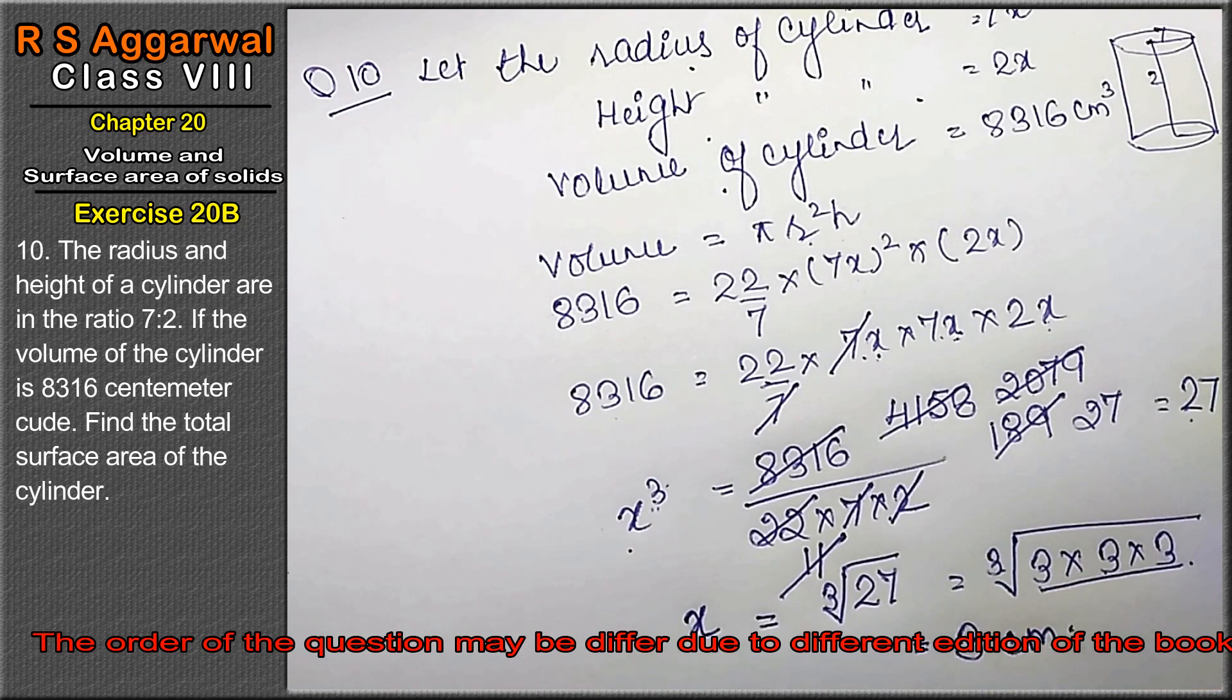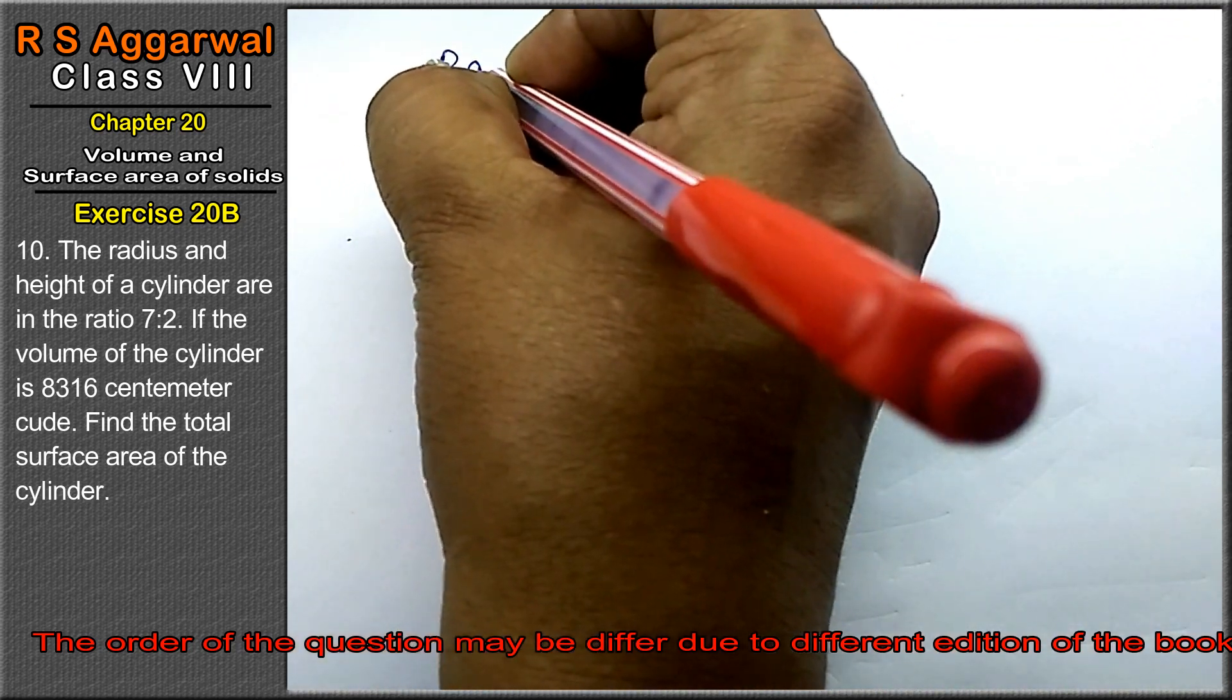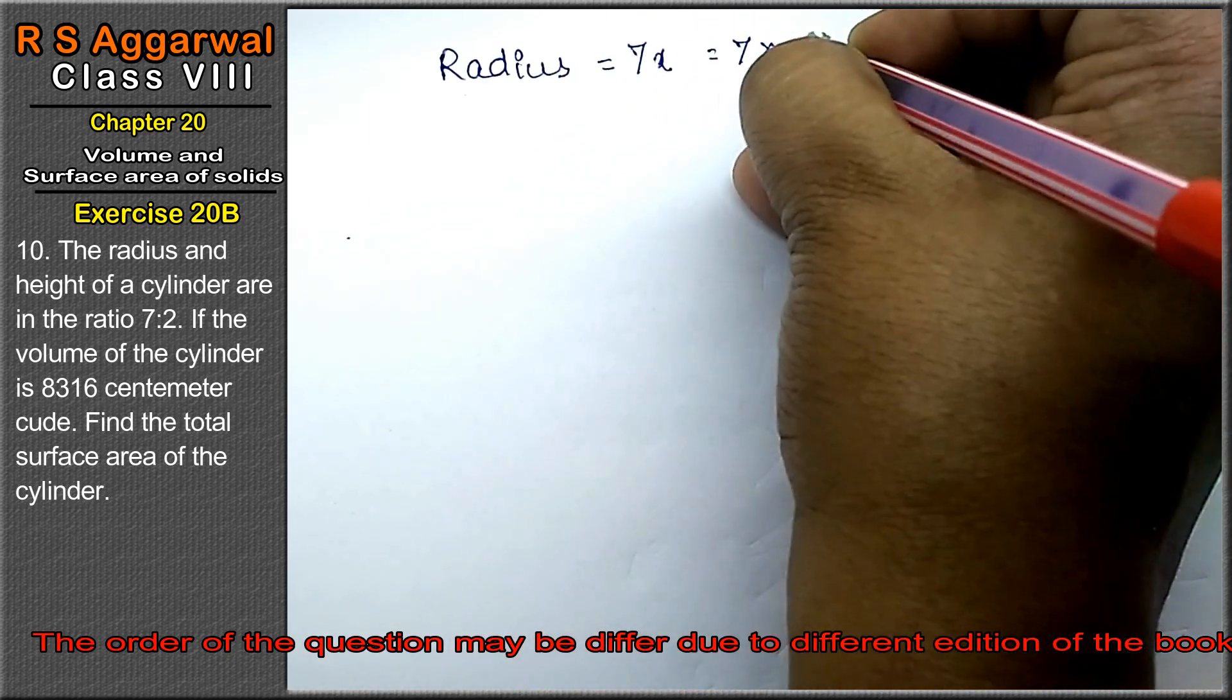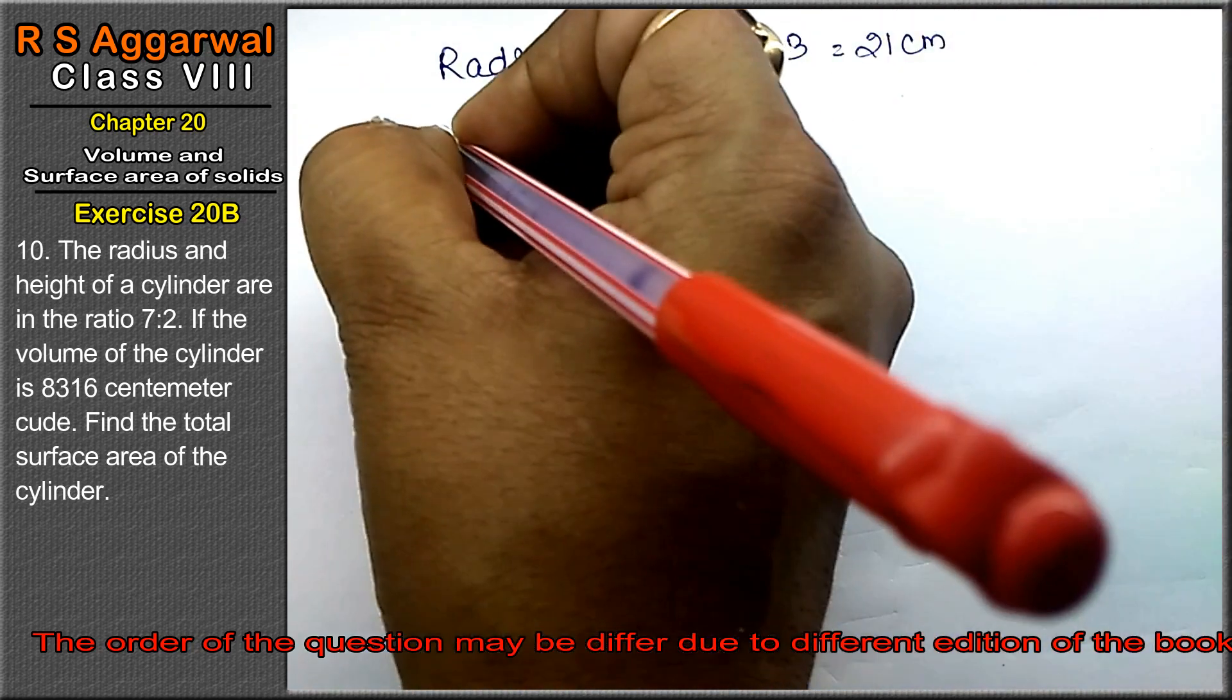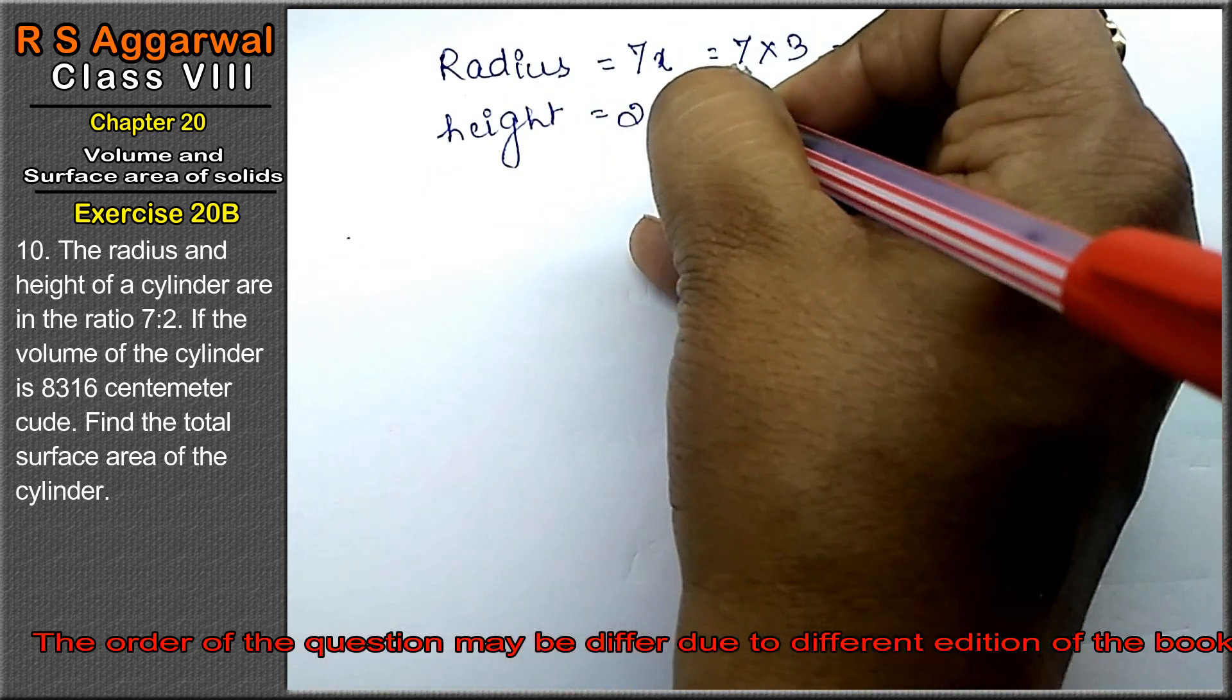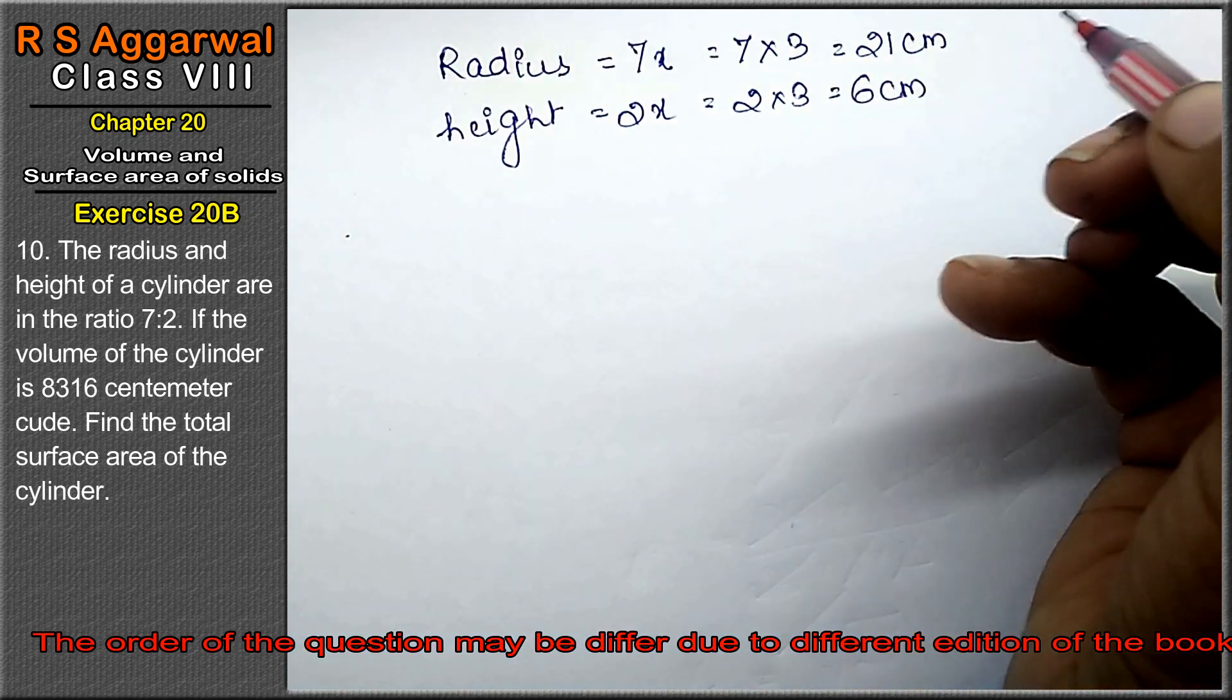Now, what is the radius? The radius equals, it is our 7x, that means 7 into 3, that means 21 centimeter. Height equals to 2x, that is 2 into 3, height is 6 cm.